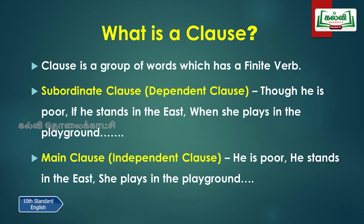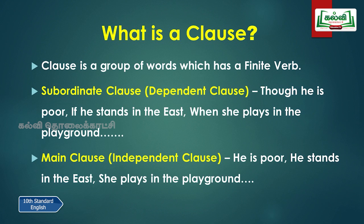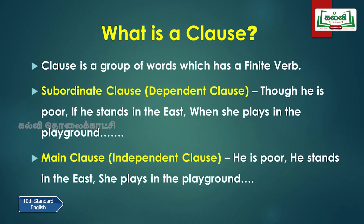Here we have two main types of clauses: subordinate clause and main clause. The subordinate clause is also called a dependent clause. Why? Because the subordinate clause will be in an incomplete sense — there will be a subject and a proper finite verb, but it would not be complete. For example: 'though he is poor', 'if he stands in the East', 'when she plays in the playground' — these are called subordinate clauses. In 'though he is poor', we have subject 'he' and finite verb 'is', yet it is incomplete because it does not have a main clause.